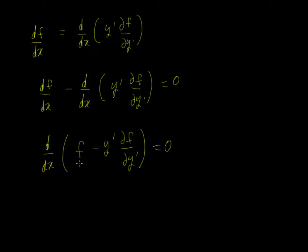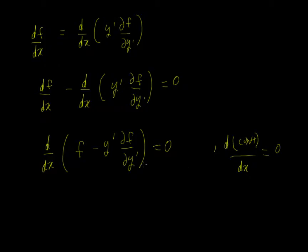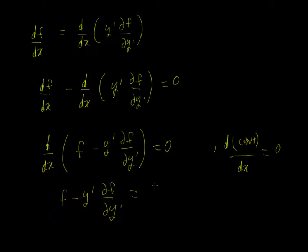Now we know that if you differentiate a constant you always get zero — for example, differentiating 5 gives zero. So here we're differentiating a function and getting zero, which means that function must itself be a constant. Therefore: f minus y' times partial f upon partial y' equals a constant.